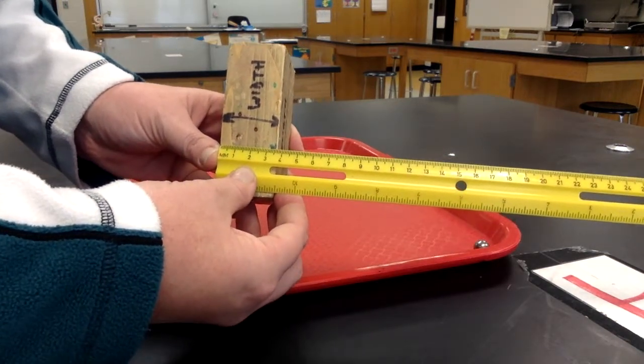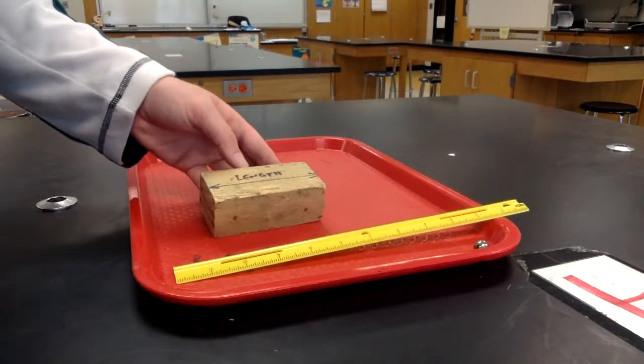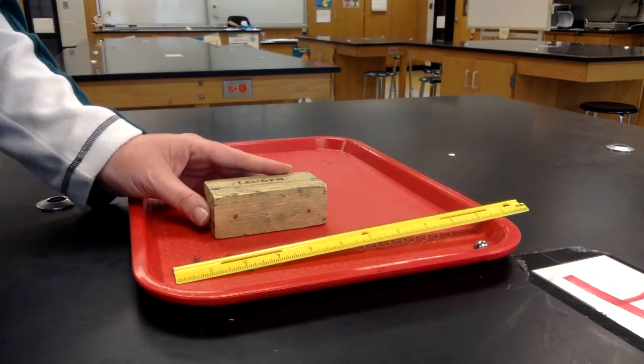I would then multiply those three numbers together to find the volume of my regularly shaped object.